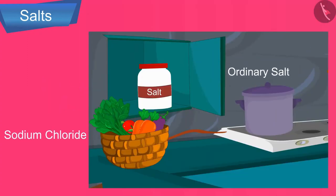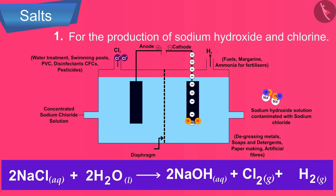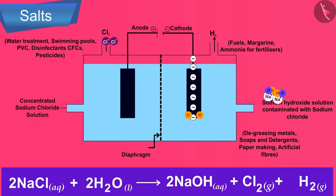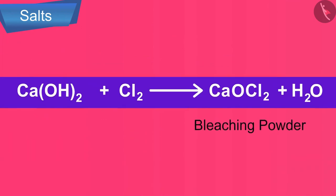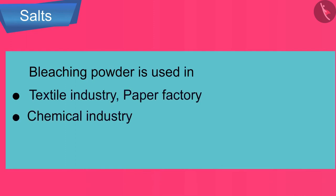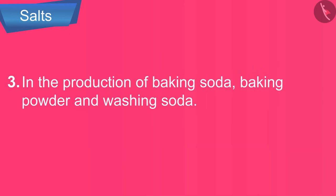Ordinary salt — sodium chloride — is an important raw material for substances of our daily use. It is used in the production of sodium hydroxide and chlorine via the chloralkali process. The electrolytic decomposition of NaCl produces chlorine gas, which is used in the production of bleaching powder. Bleaching powder is used in the textile industry, paper factories, chemical industries, and for treating drinking water to remove bacteria. NaCl is also used in the production of baking soda, baking powder, and washing soda.